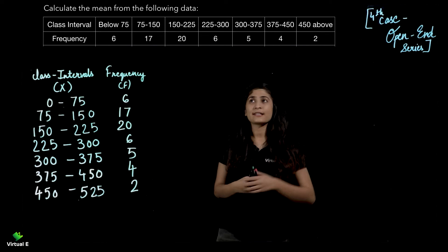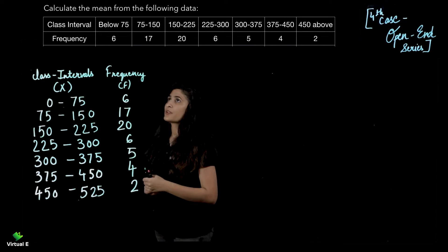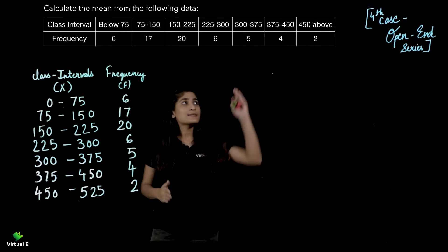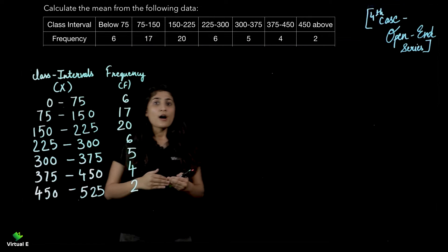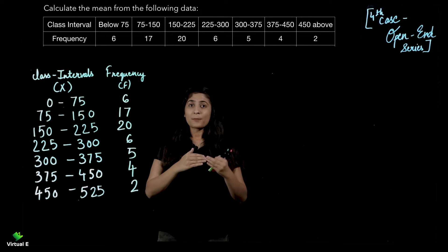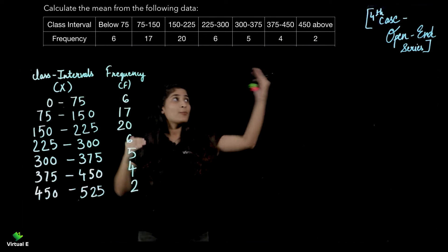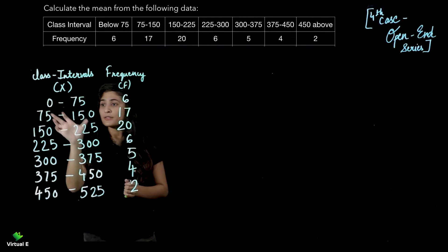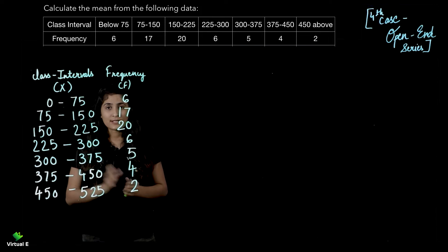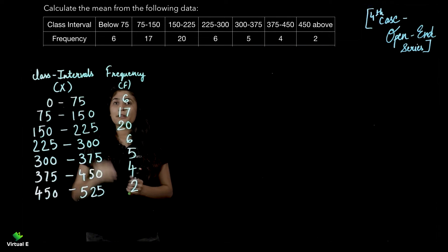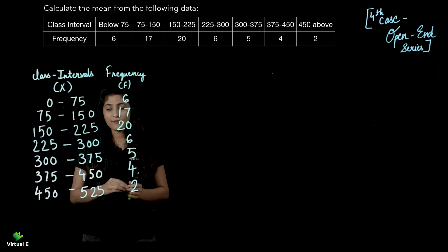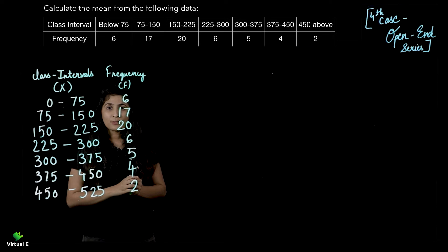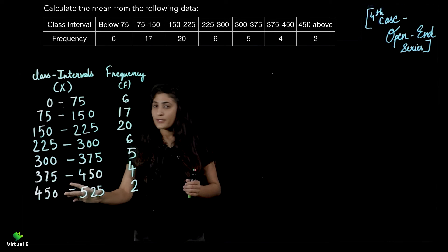The fourth case is open-end series. Look at the question. The first class says below 75 and the last class says above 450. You have to see the class intervals in between, which is 75. Below 75 will give the class interval 0 to 75, and above 450, 450 से 525 तक का आपको interval मिल गया. Now the class intervals are here and sorted.